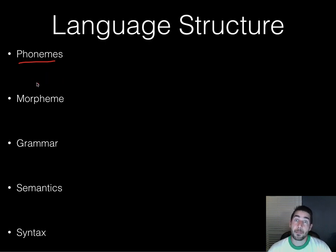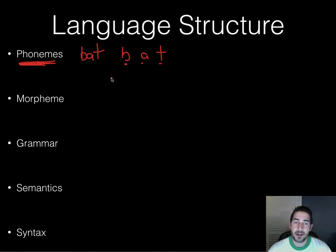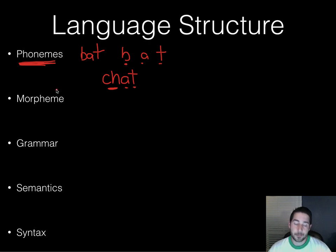A phoneme is the smallest sound of language. For instance, the word 'bat' has three phonemes in it. Similarly, 'chat' also has three phonemes — each distinct sound counts as one phoneme. So a phoneme is just the smallest unit of sound in language.